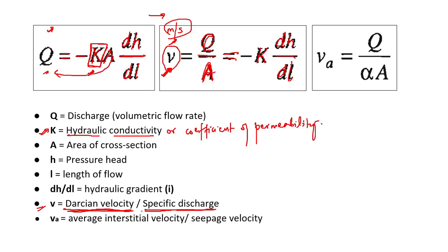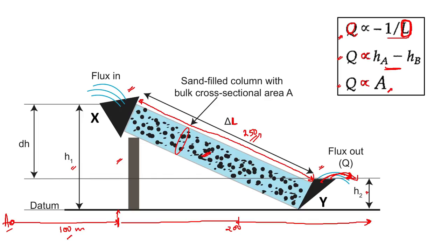The units of specific discharge are meters of water per second. Now, why is there a minus sign? In the formula there is a minus sign because this whole term dH/dL has to be negative. And therefore a minus sign is included to make the result positive. If you subtract H1 minus H2, since H1 is greater than H2, you get a positive value.